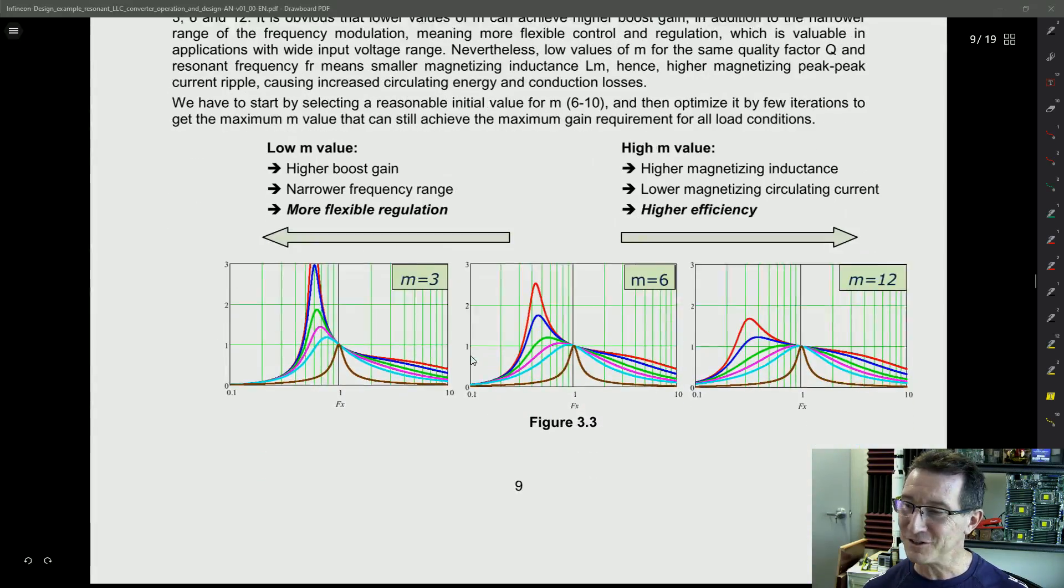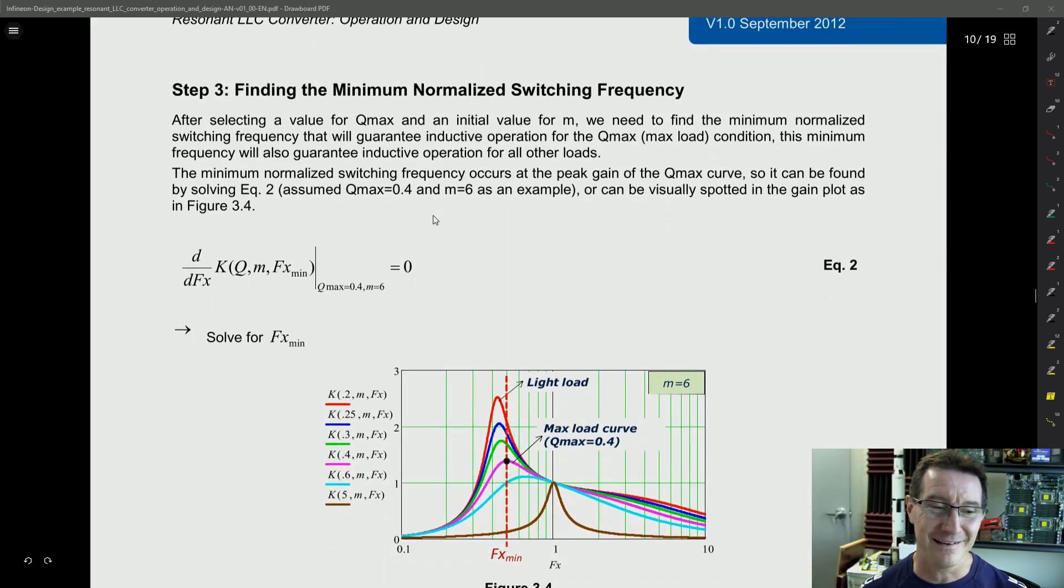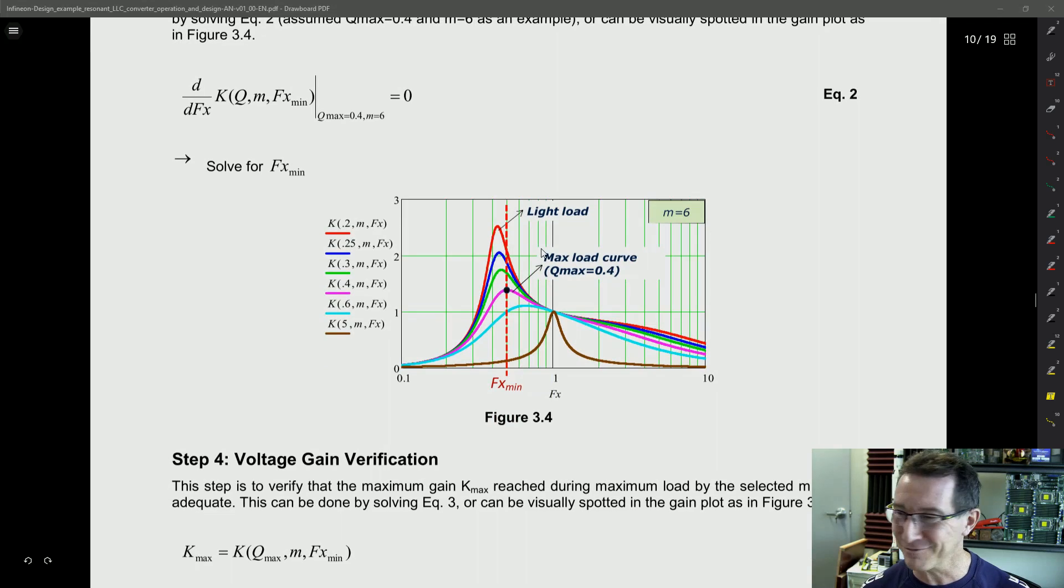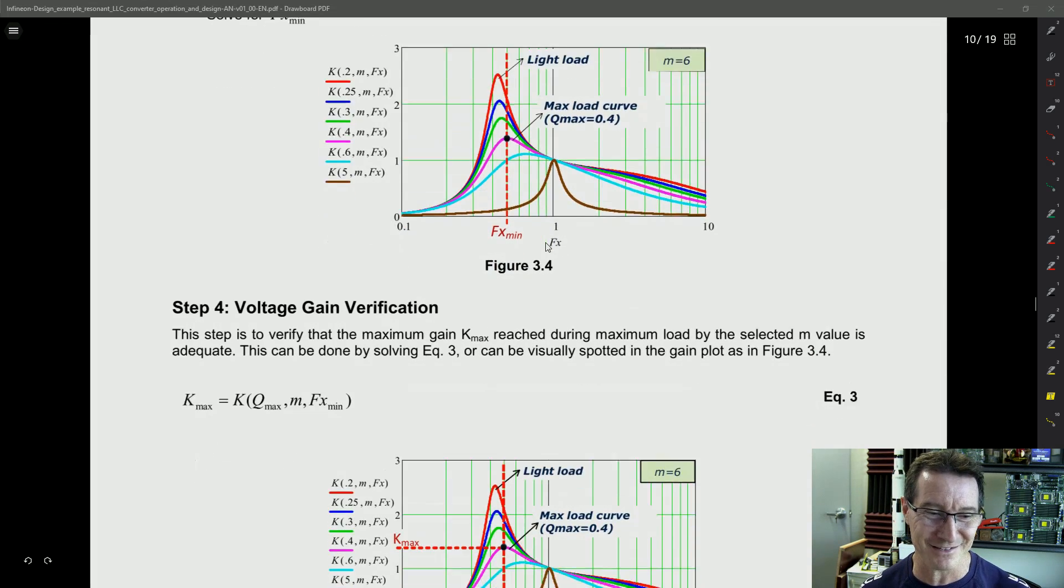So here it is. This is for different values of M, for example. Like, M3, M6, for example. And how this flattens out the peaks here. So lower M value is going to give you higher boost gain, narrower frequency range, more flexible regulation. But if you want higher efficiency, you've got to go for the higher M values. But then you're going to get higher magnetizing inductance. And it's just, no.